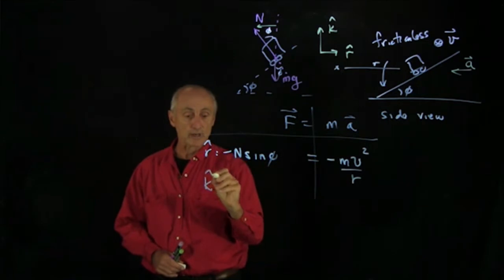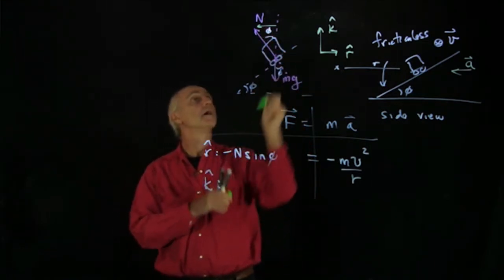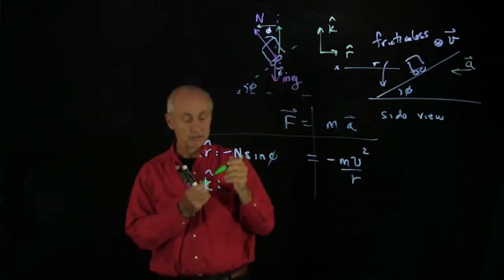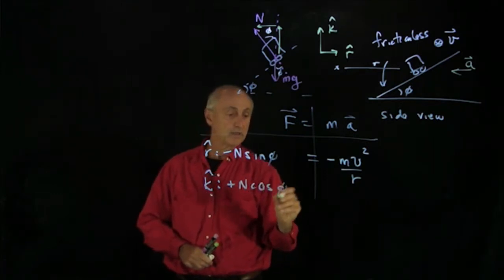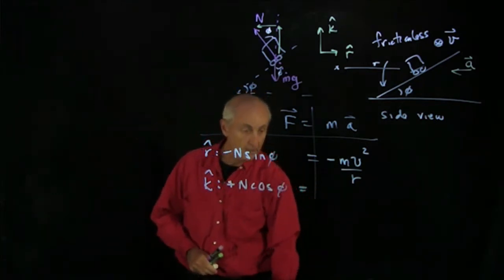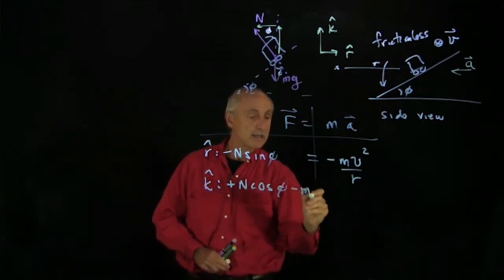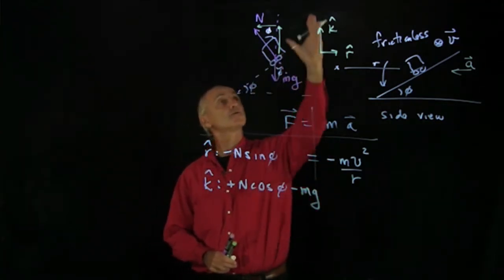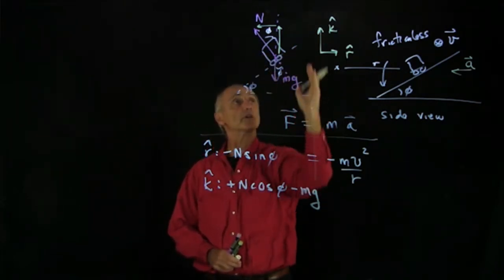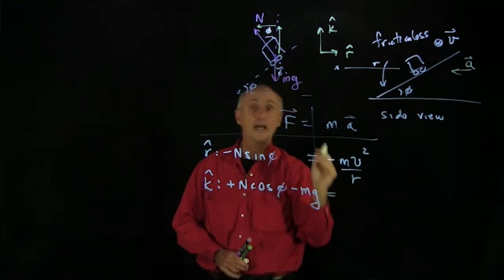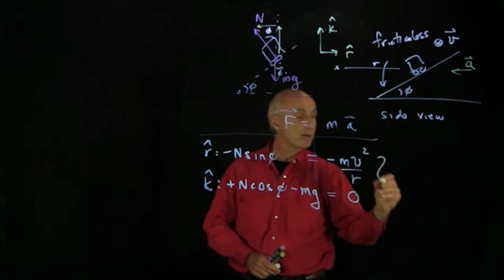Now for the k hat direction, we have a component of the normal force that's pointing up. I'll just draw that. That's adjacent to the angle. So we have plus n cosine phi. And we have the gravitational force downward minus mg. And as far as the vertical direction goes, because the car is going in a circle, there's no acceleration up or down in the vertical direction. Again, that's a constraint in this problem. That's equal to 0.